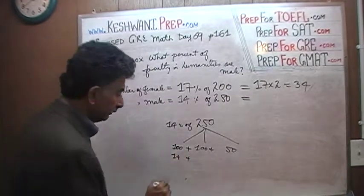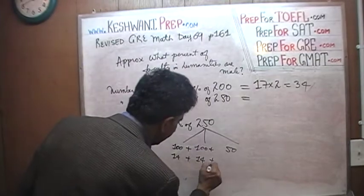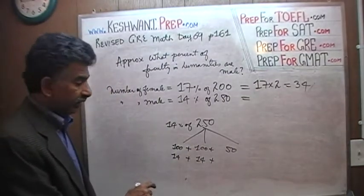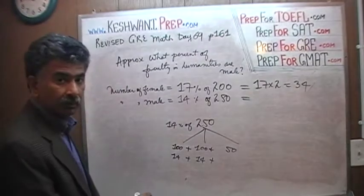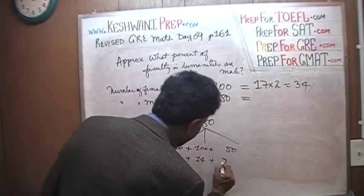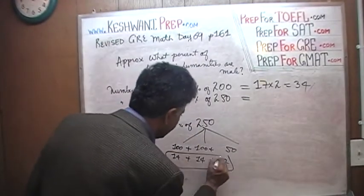What is fourteen percent of 100? Well, fourteen percent of 100 is 14. What is fourteen percent of another 100? That's another 14. And if fourteen percent of 100 is 14, then fourteen percent of 50, which is half the amount, which stands to reason, must be 7. So that is the answer. That's fourteen percent of 250.